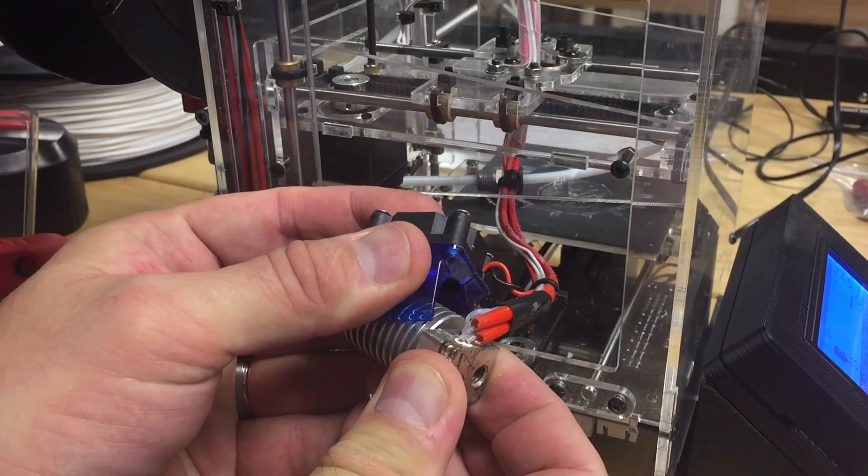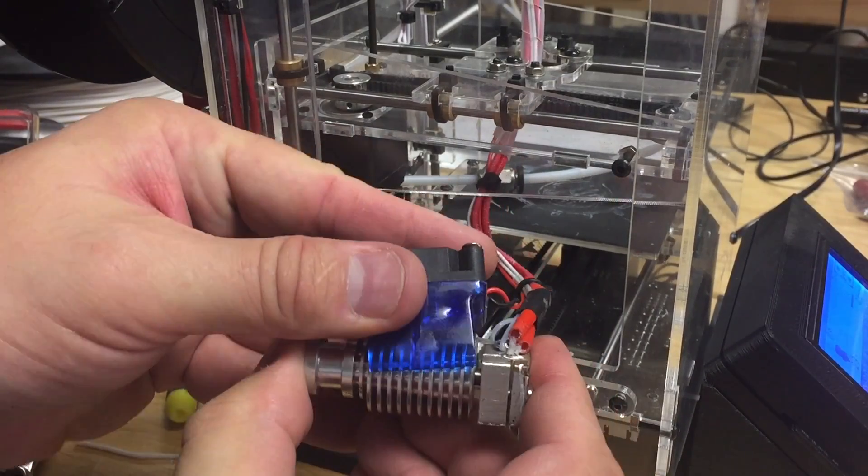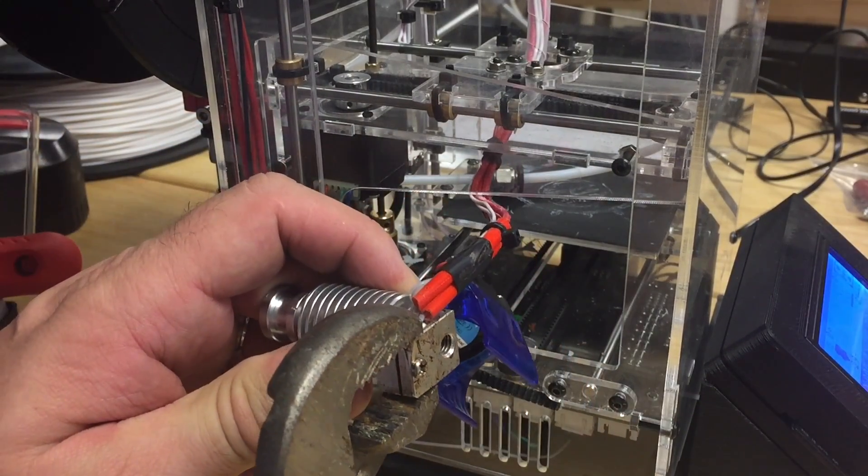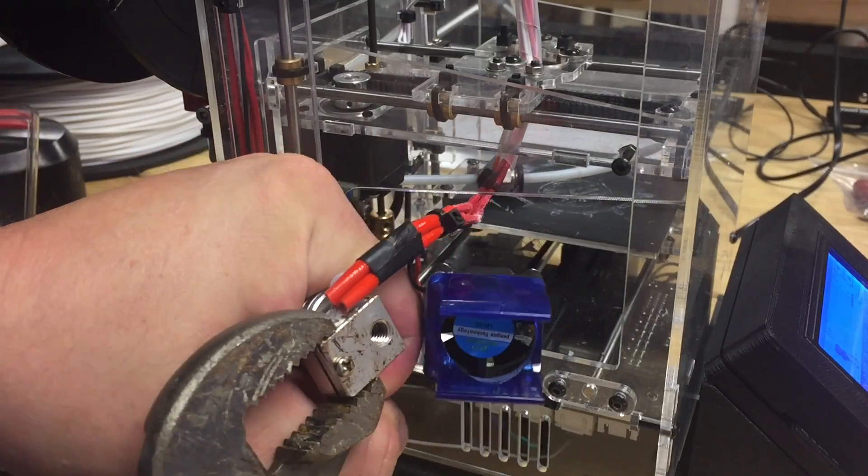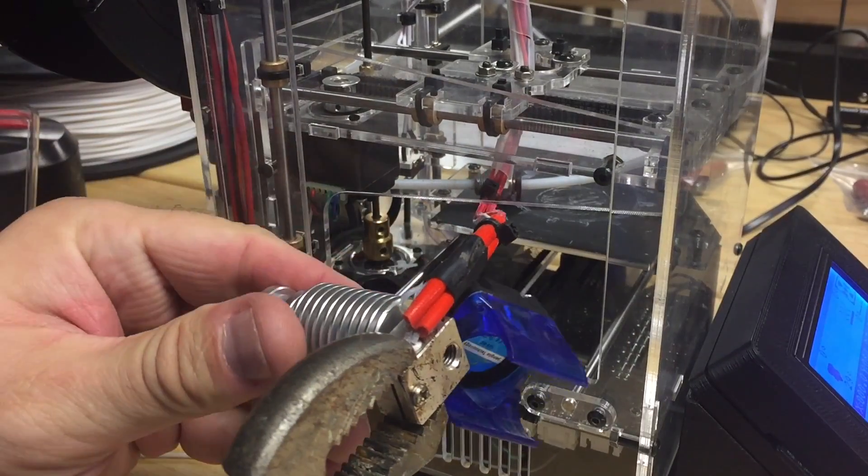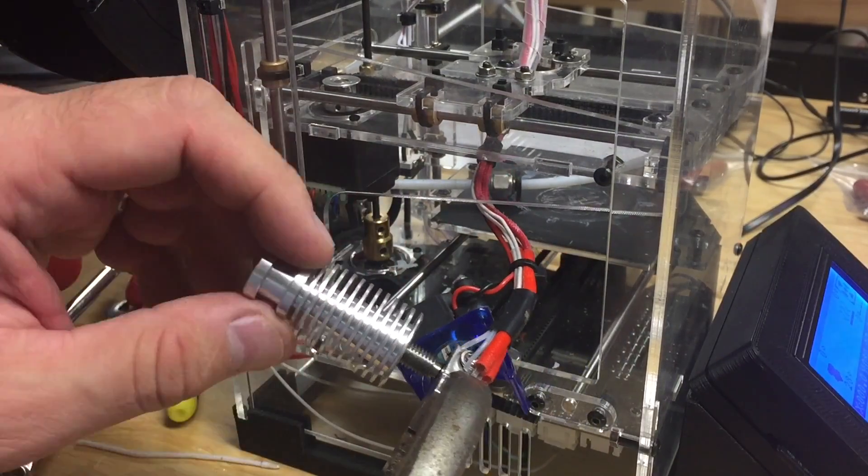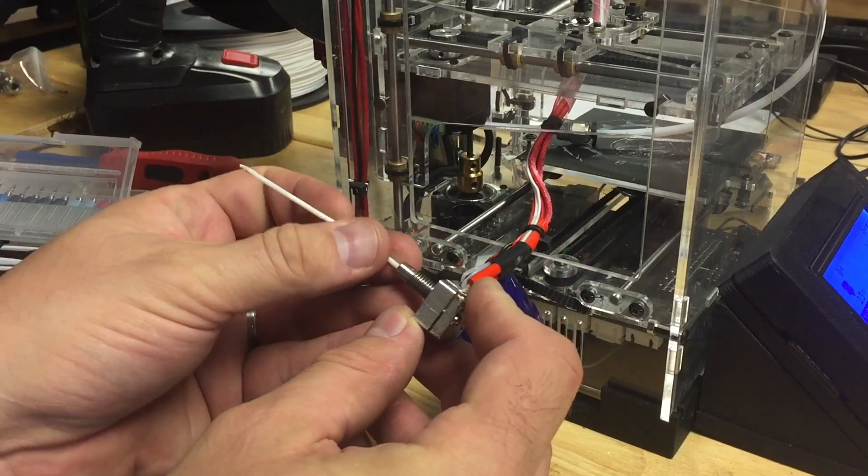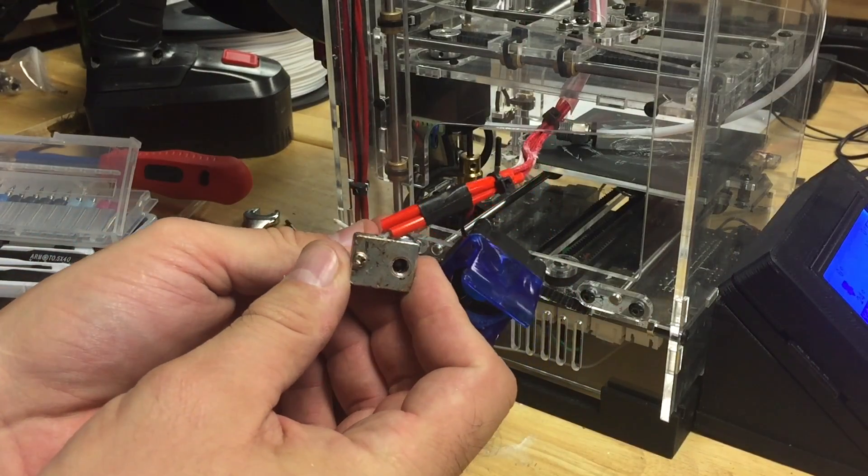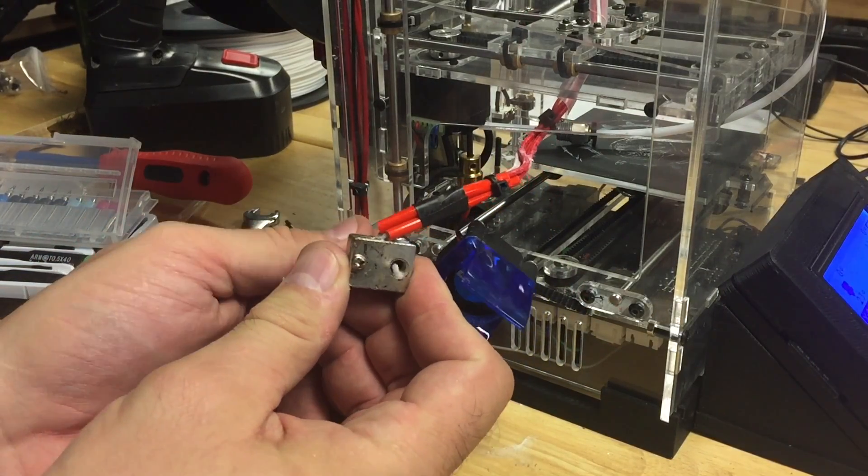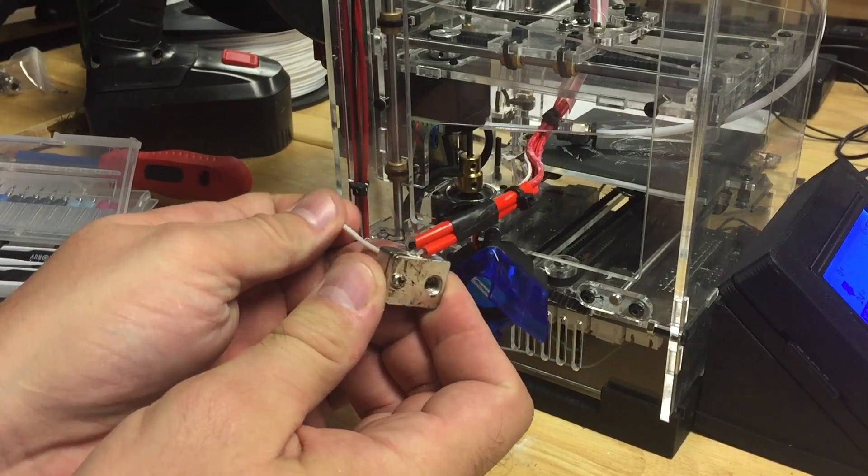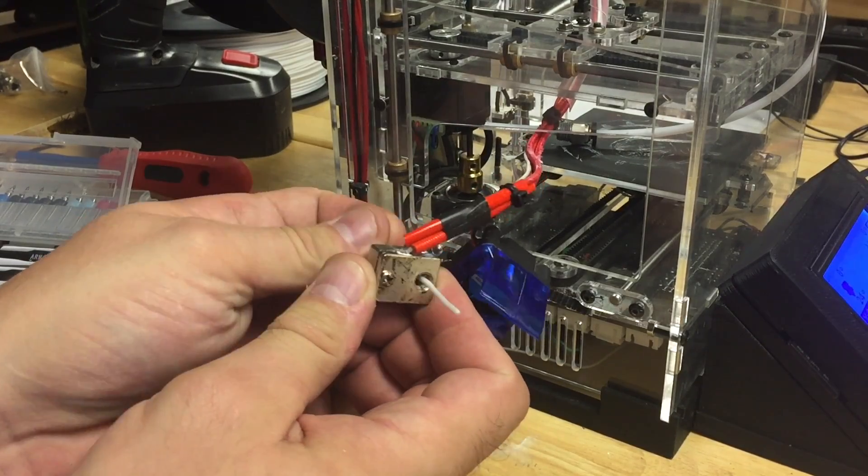Then I removed the fan that just clips on over the heat sink. Then I used the channel locks again and removed the heat sink. This I could just loosen by hand. It just unscrews. I used the blunt end of the filament that I pulled out and pushed it back through, and a few small pieces popped out but that was it. Most of the blockage was in the nozzle.